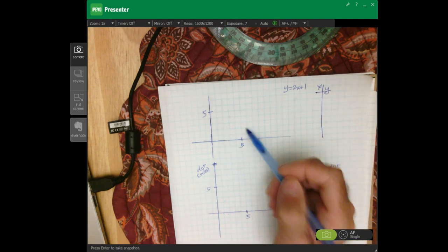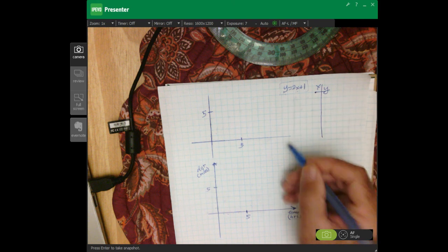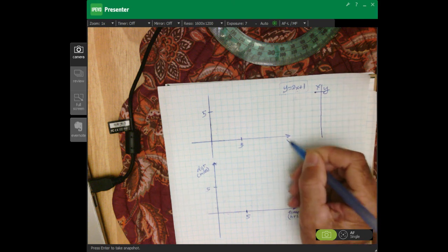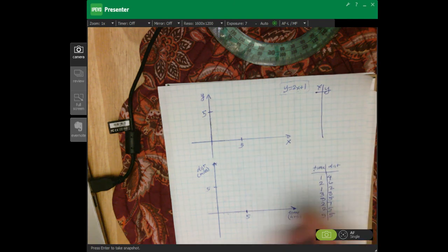We're going to just review graphing briefly. So let's say we have a simple equation like this with two variables, x and y. The x-axis is always your horizontal axis and your y-axis is always the vertical axis. So these are really just two number lines.